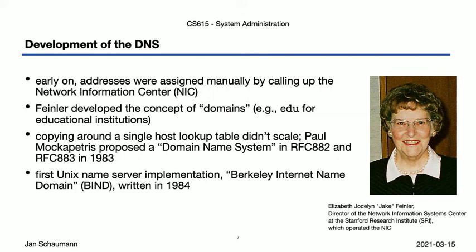But of course, copying around a text file was obviously not a scalable solution. So under the direction of John Postel, Paul Mockapetris developed a proposal for a domain name system in RFCs 882 and 883 back in 1983, and four grad students at UC Berkeley were the first to implement this proposal as a UNIX nameserver named the Berkeley Internet Name Domain, or BIND, in 1984. BIND is to this day the most widely used DNS server on the internet, and currently maintained by the Internet Systems Consortium, or ISC.